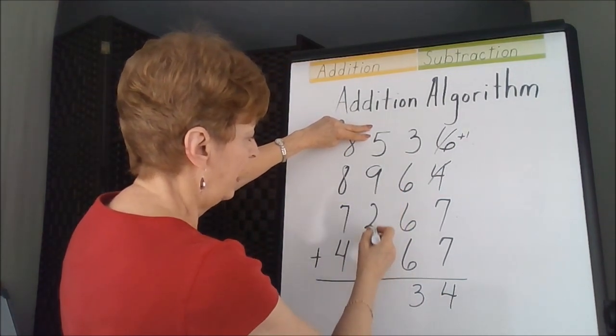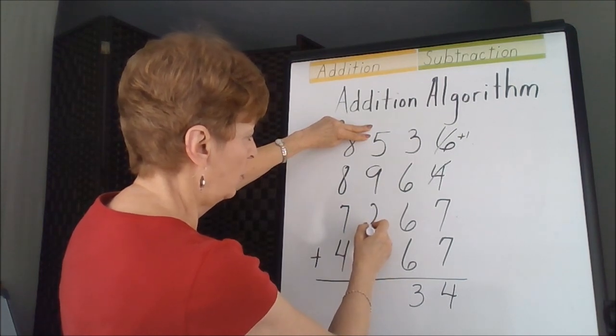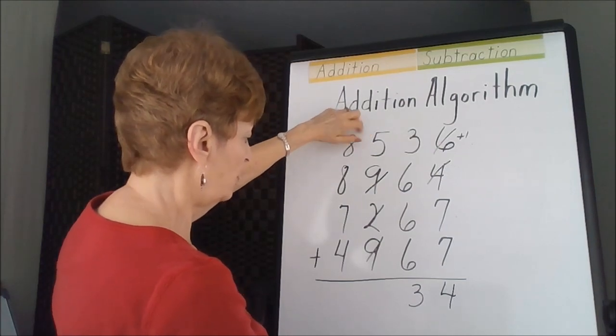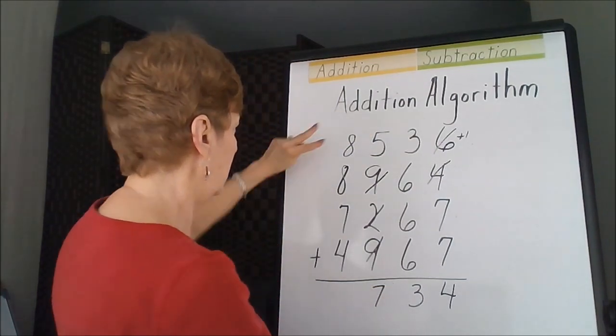9 and 9 is 18, and I have 19, 20, so this makes 20, 25, 26, 27, carry 2.